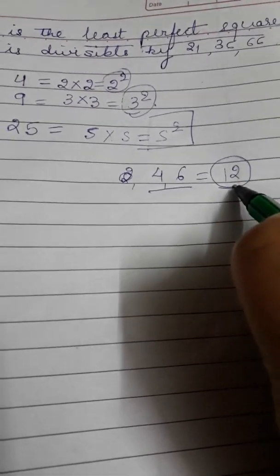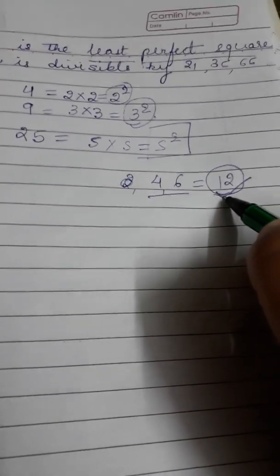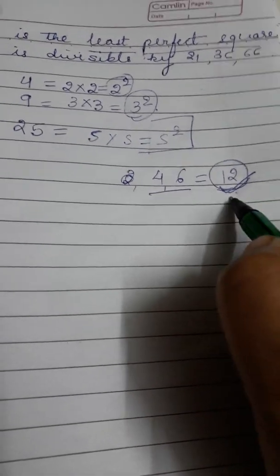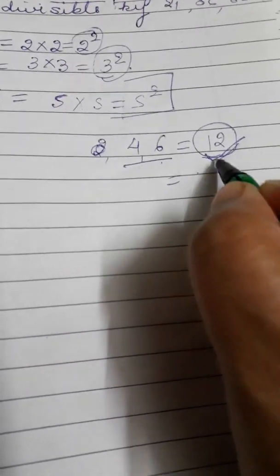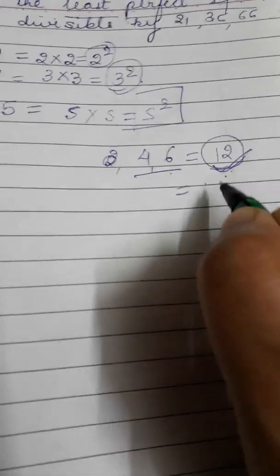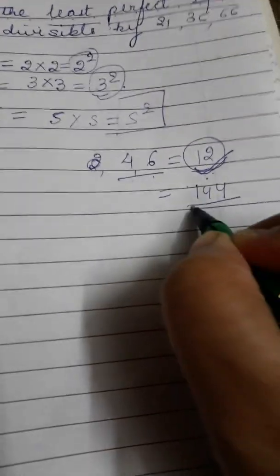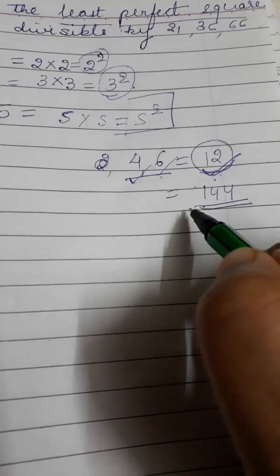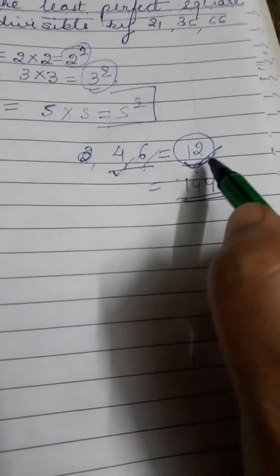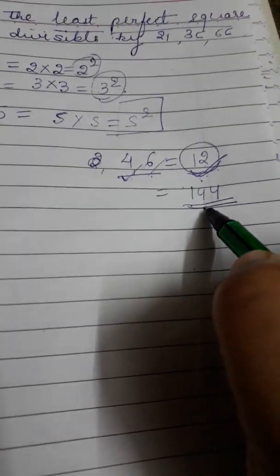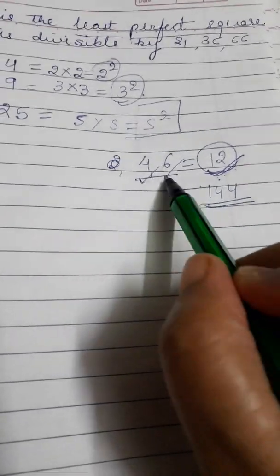Any number which is divisible by 12 will be divisible by 4 and 6. So if I make 12 into 12 as 144, then 144 will be surely divisible by 4 and 6 because 144 is divisible by 12. If I take any multiple of 12, it will surely be divisible by 4 and 6.